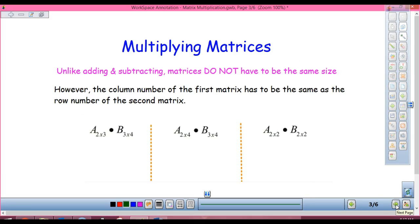So in order to be able to multiply matrices, they don't have to be the same, but our inside dimensions have to be the same. So I can multiply a two by three and a three by four, because those threes on the inside are the same, and what we end up getting is going to be a two by four. Our outsides are what we're going to end up getting.